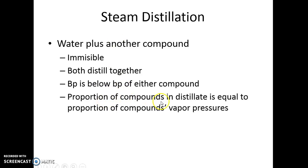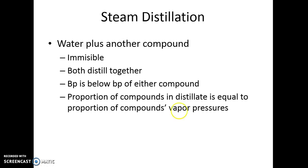The proportion of the compounds in the distillate is equal to the proportion of the compound's vapor pressure. So if water has a vapor pressure of, let's say, 720 and the other compound has a vapor pressure of 40, the ratio of the compounds in the mixture will be the same as the ratio of 720 to 40.